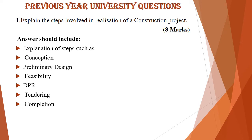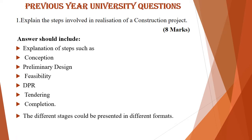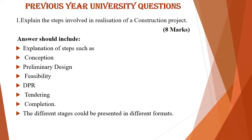You have to list out each of the steps during the realization stage — conception, preliminary design, feasibility, detailed project report, tendering and completion. Thereafter you have to briefly explain the different stages, and the different stages could be presented in different formats.